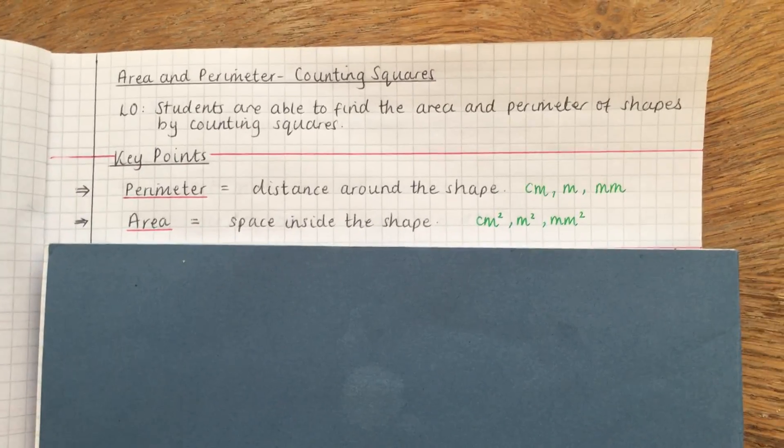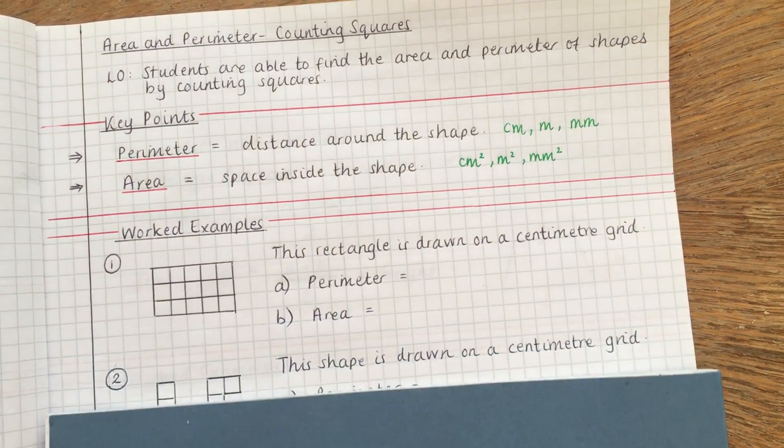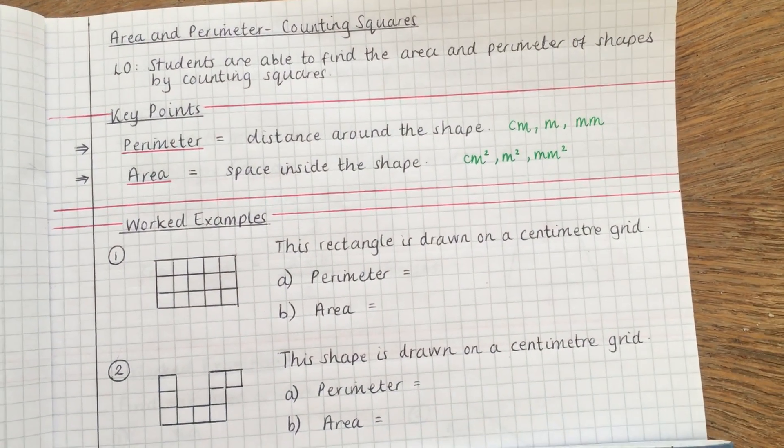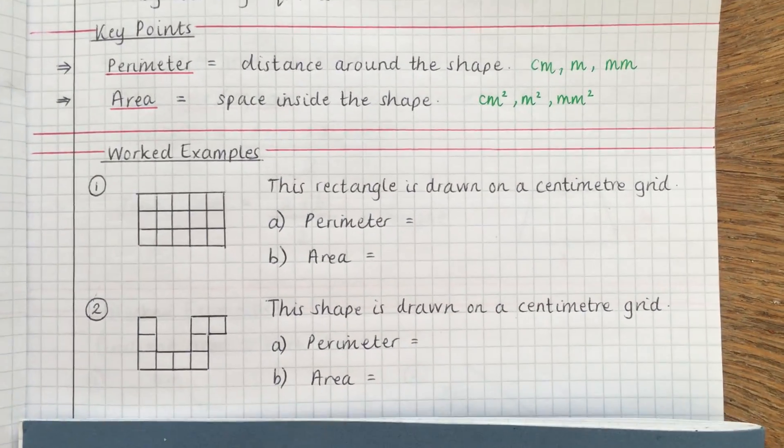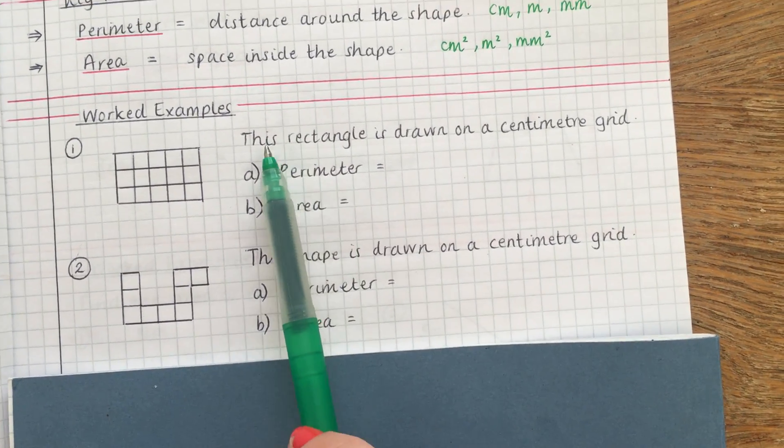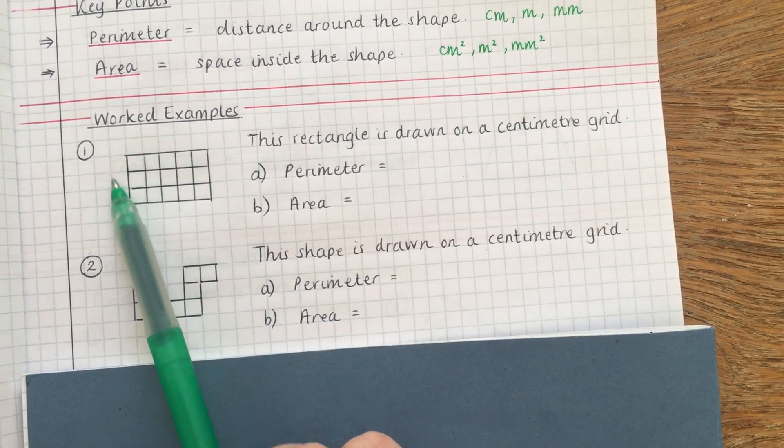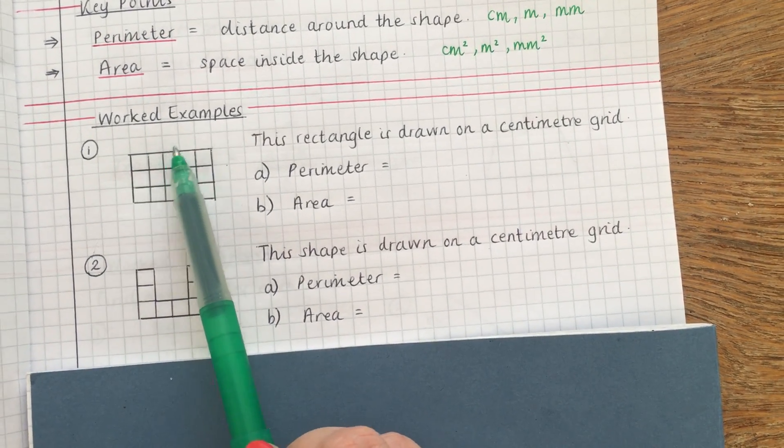Okay, so we're going to move straight on to some worked examples now. We're going to look at two questions together and then you can have a go at one on your own. So this first example, this rectangle is drawn on a centimeter grid, so imagine these boxes are one centimeter wide.